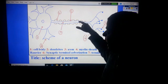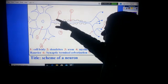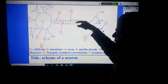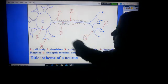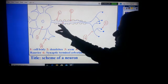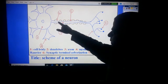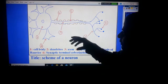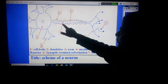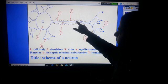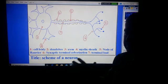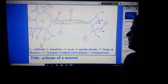The axon is surrounded by a substance called myelin sheath. Between the myelin sheaths, we see here a node of Ranvier, part of the axon situated between two myelin sheaths.